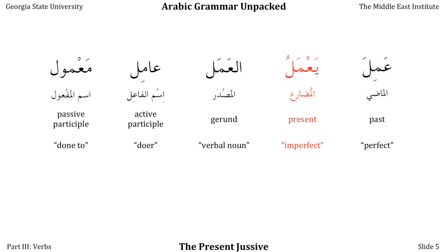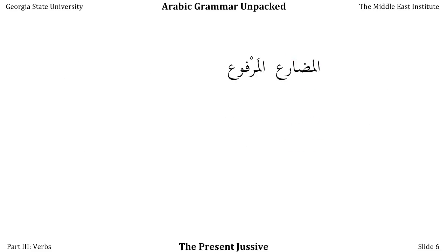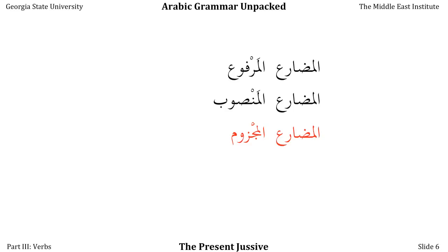In this video we'll be concentrating on the مضارع, the present tense. Unlike the last two videos where we looked at the مضارع مرفوع — the first version, the present indicative — or the مضارع منصوب — the second version, the present subjunctive — in this video we'll be looking at المضارع المجزوم, the third version, which in English is called the jussive. In Arabic, مجزوم means 'cut off' or 'severed,' referring to the sukūn at the end of some forms of the verb.